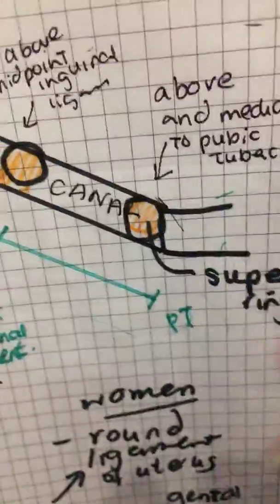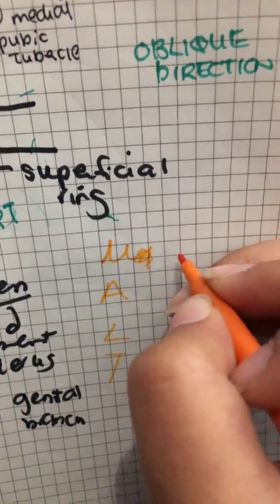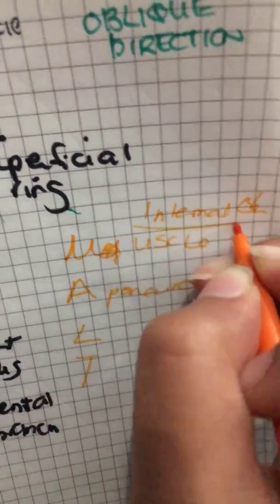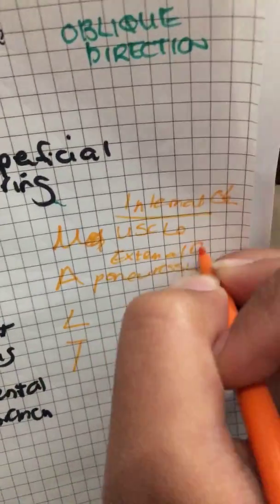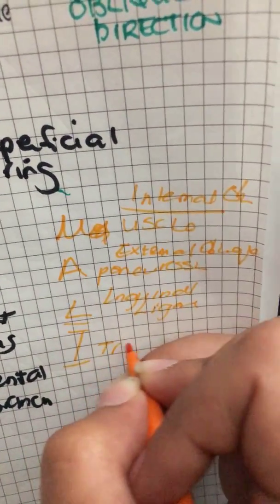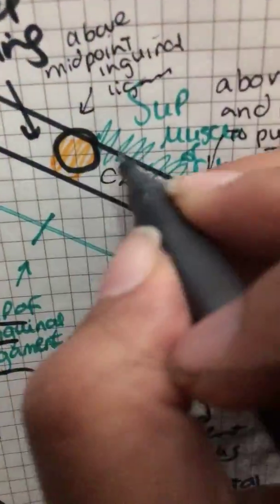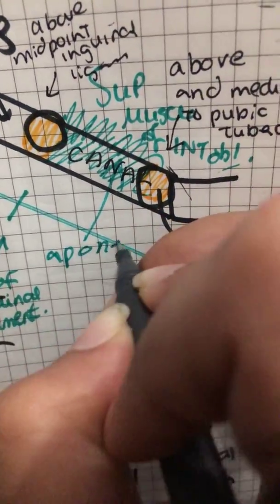Now let's look at the borders of the inguinal canal, because this is a question you will definitely be asked. The way to remember this is the mnemonic MALT. M stands for muscle — specifically the internal oblique muscle, which forms the superior border. A stands for aponeurosis — the external oblique aponeurosis, which forms the anterior border.